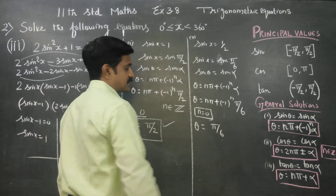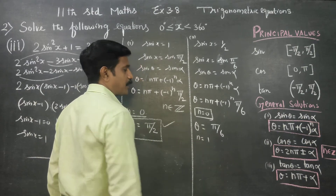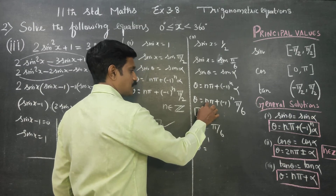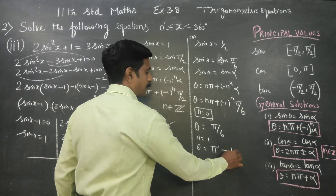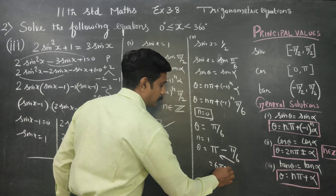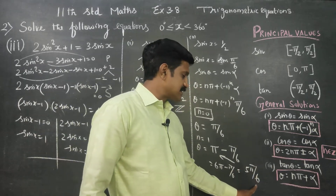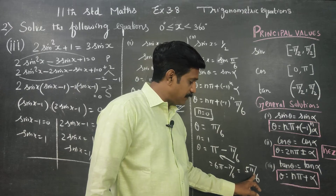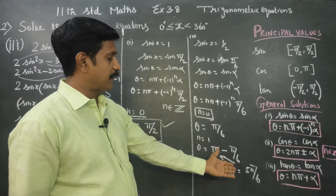For n = 0: θ = π/6. Pi by 6 is 30°, which is allowed. For n = 1: θ = π - π/6 = (6π - π)/6 = 5π/6. Now 5π/6 means 5 × 30° = 150°, which is also allowed.